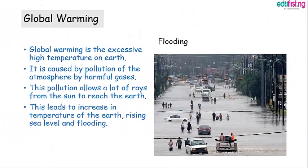There are some bad effects of weather on our earth. One such bad effect is global warming. Global warming is the excessive high temperature on the earth. It is caused by pollution of the atmosphere by harmful gases. This pollution allows a lot of rays from the sun to reach the earth, leading to an increase in temperature. The increase in temperature leads to the ice in our seas and oceans dissolving, resulting in rising sea levels and flooding.